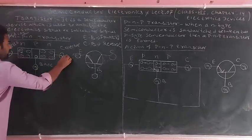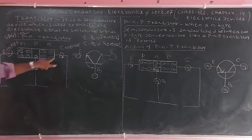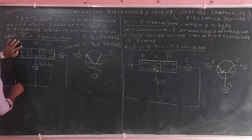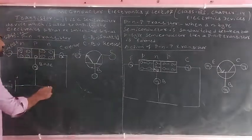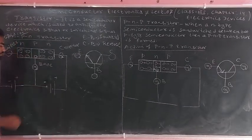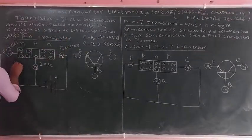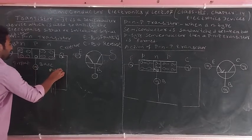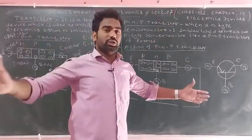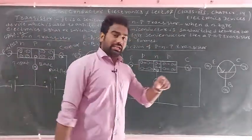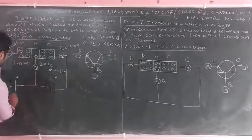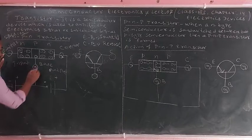We set up the connection with the emitter-base forward biased. For the N-type semiconductor in the emitter, negative is connected to negative and positive to positive. For the collector-base region, it is reverse biased. We apply an emitter-base voltage, which we call V_EB, and a collector-base voltage, which we call V_CB, to demonstrate the amplifier action with input and output signals.